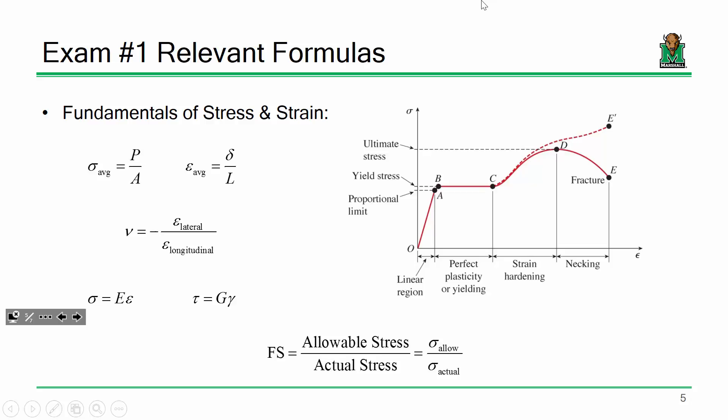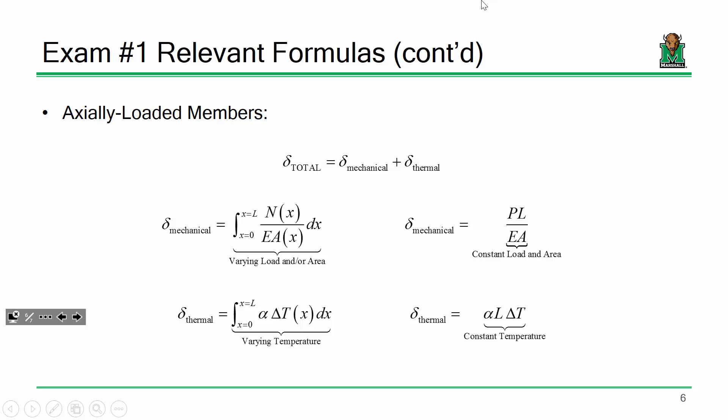For axially loaded members, total deformation equals mechanical deformation plus thermal deformation. For mechanical deformation, if you have varying load and/or area you have to integrate; if it's constant, it's just PL over EA. For thermal deformation, if you have varying temperature you have to integrate; if it's constant temperature, use the standard formula.